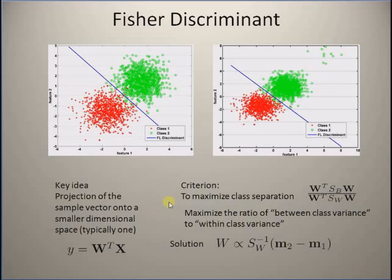You want to maximize the ratio of between-class variance to within-class variance. The solution is proportional to S_W inverse multiplied by the mean difference (m2 minus m1), where S_W represents the within-class variance and m2 minus m1 represents the between-class variance. The projection matrix is basically proportional to this product, and y is a scalar value rather than a full discriminant function.